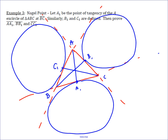By Ceva's theorem, we must have that (AB1 / B1C) times (CA1 / A1B) times (BC1 / C1A) equals 1 — if those equal 1, then these cevians are concurrent with each other.